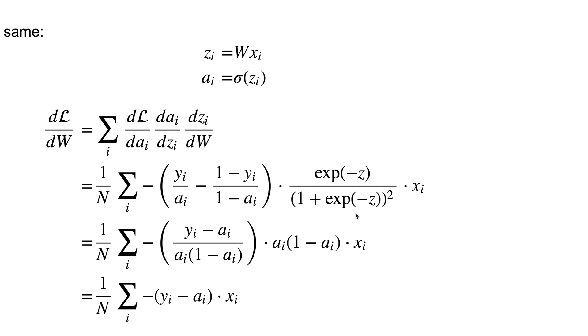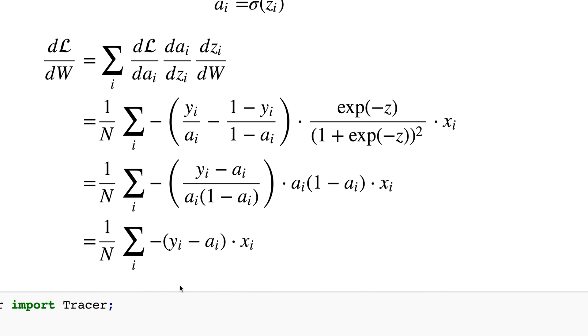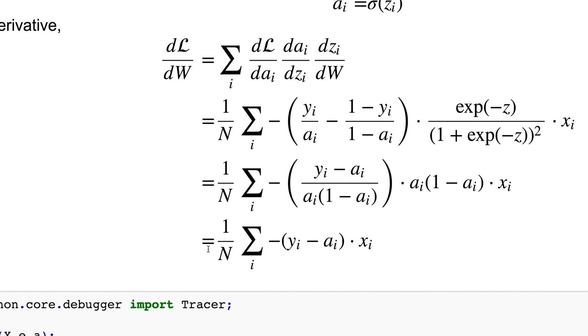da/dz you get this term over here, and then finally dz/dw, which is really easy, just simply ends up being x. Okay, but a little trick that you can do is this thing over here, this da/dz term turns out to be exactly the same as writing a multiplied by 1 minus a, and this is going to be useful. And the reason it's useful is because it cancels out with this a multiplied by 1 minus a down here.